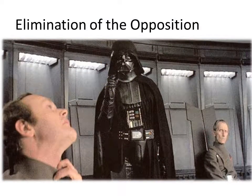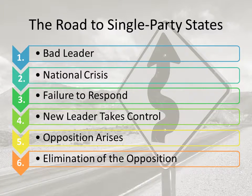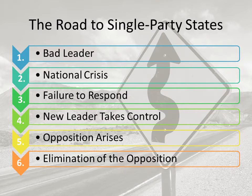And finally, the sixth step: the new leader and his or her political party crush the opposition. This is usually done through violence and unfair trials that lead to jail time, and in many cases torture, for anybody that stands up to them. This could also be done through propaganda, education, and the media. So there you have it — that is how we get from a nice, gridlocked representative democracy to an authoritarian dictatorship run by a single political party. Now don't ever let it happen to you!